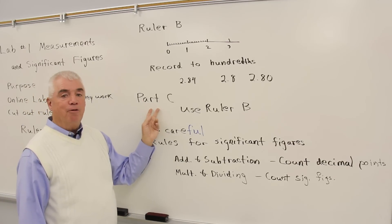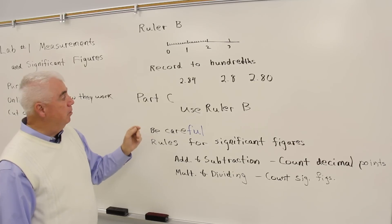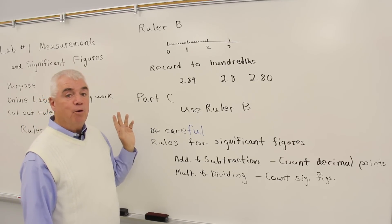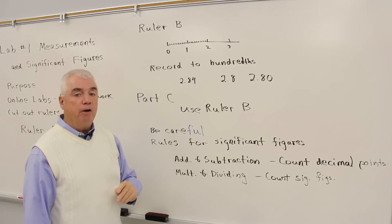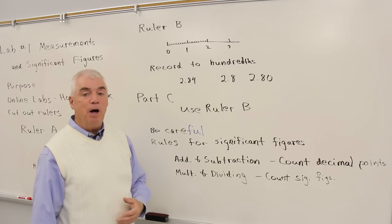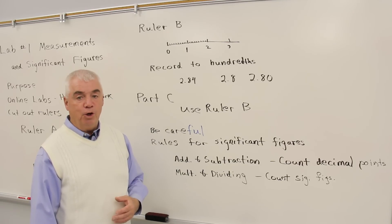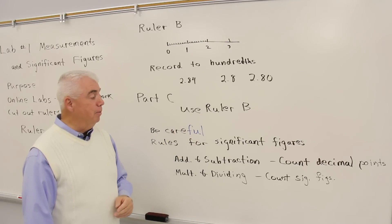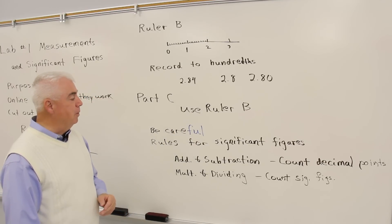This is a little bit of a tip now for Part C. We've seen that ruler A can be recorded to the tenths, ruler B to the hundredths, and if you're doing an experiment now and want to gather data as accurate as possible, which ruler would you use? Well, the answer is ruler B. So make sure that you use ruler B in Part C.